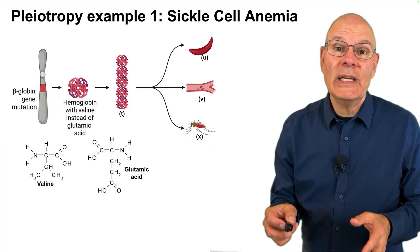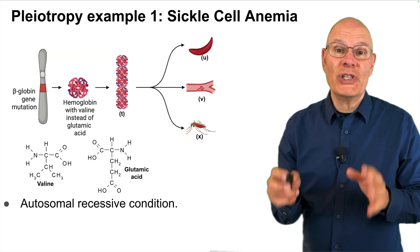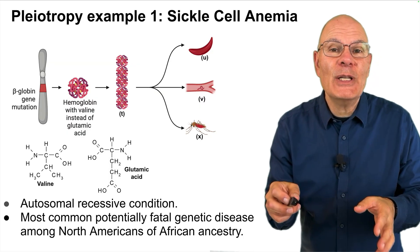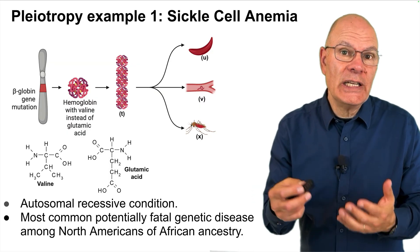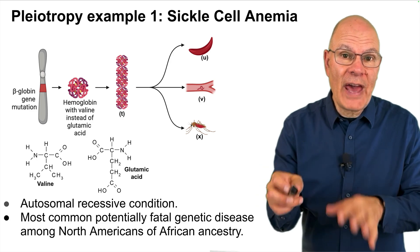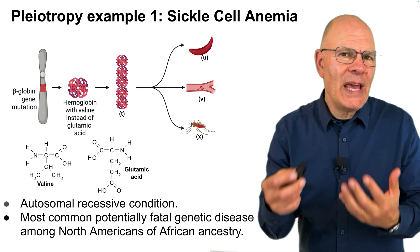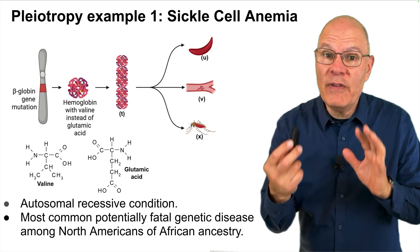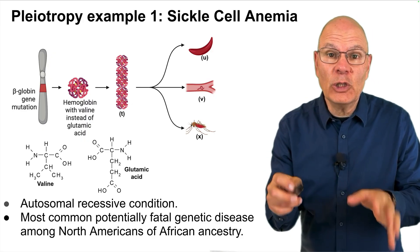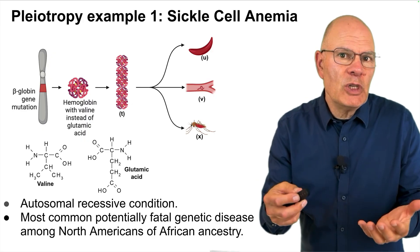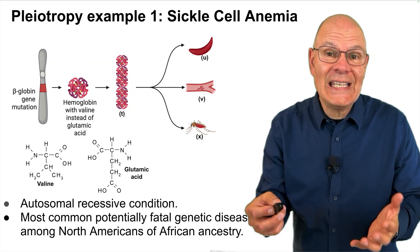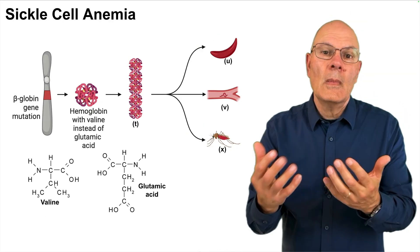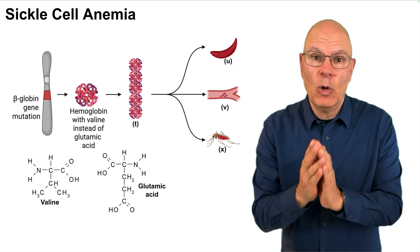Sickle cell anemia is an autosomal recessive condition, and it is the most common potentially fatal genetic disease among Americans of African descent. Though within the past 30 years, this disease has gone from one that was invariably fatal during childhood to one in which people live into their 50s and 60s, depending on the quality of the medical care that they receive.